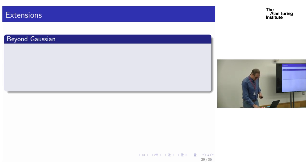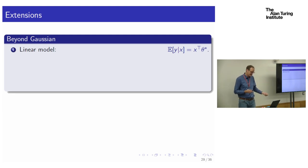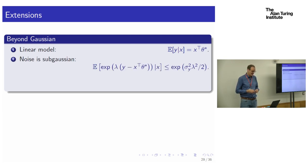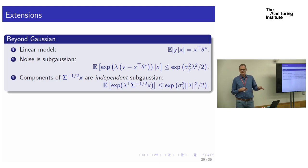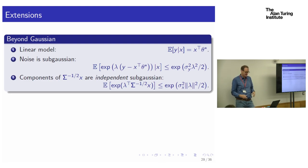We can go beyond the Gaussian case. The assumptions we need are: the model is well-specified (linear model), the noise is sub-Gaussian, the X's are sub-Gaussian, and we can whiten things to get a vector with independent sub-Gaussian components. We don't know what to do in the misspecified case. With less independence, we may be able to deal with that — an interesting example is the kernel case, where you're in a linear setting arising from a smooth map from a low-dimensional space.